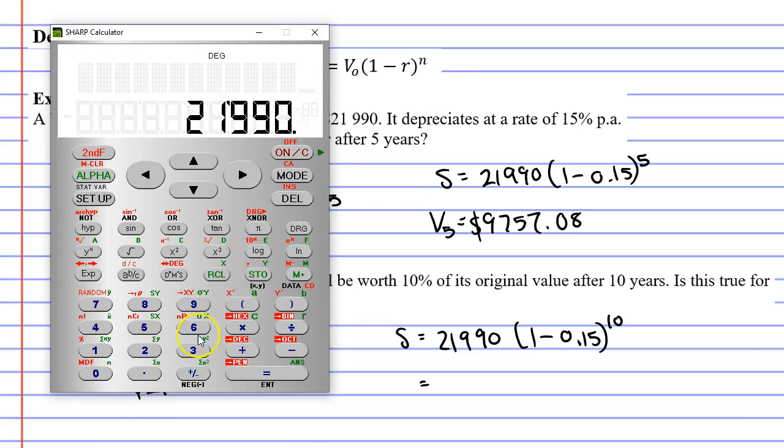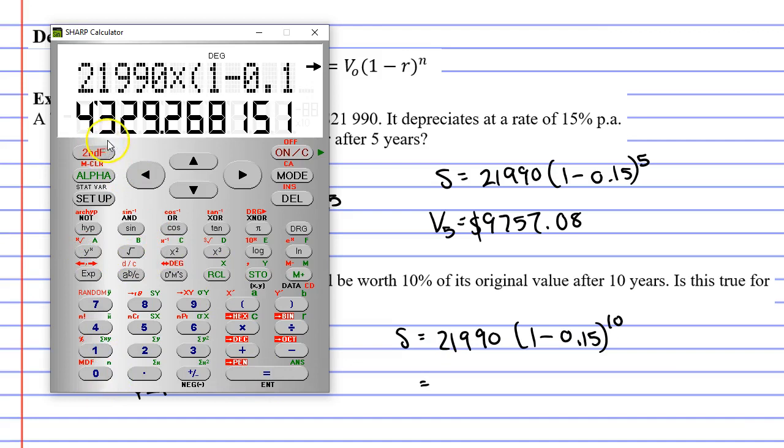$21,990 times bracket, 1 minus 0.15, close the brackets, and then we put this to the power of 10. What do we get? $4,329.